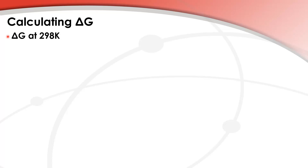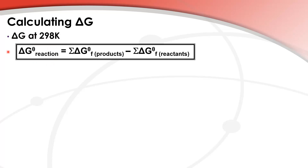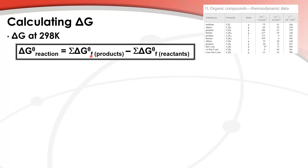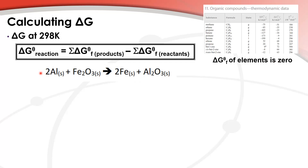Let's calculate delta G, the change in Gibbs free energy, first at 298 K. We'll use this reaction here. The change in Gibbs free energy of formation values can be found in table 11 of the data booklet. Note that the Gibbs free energy of formation of elements is zero. We will measure the change in Gibbs free energy for this reaction and then determine if it is spontaneous or non-spontaneous.